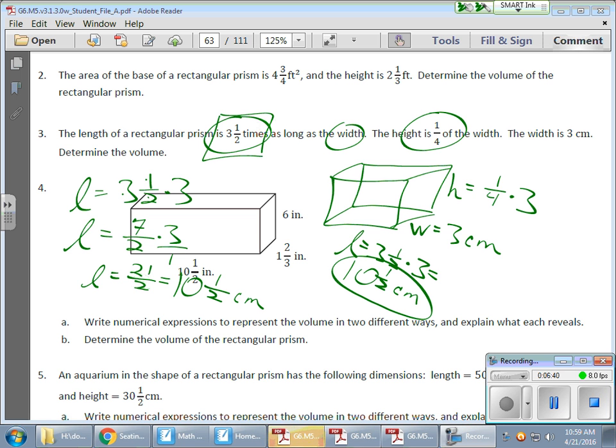And then the other guy is 1/4. So the height is 1/4 of three, 3 over 1. And if you multiply those, you get 3/4. So this becomes 3/4 of a centimeter.